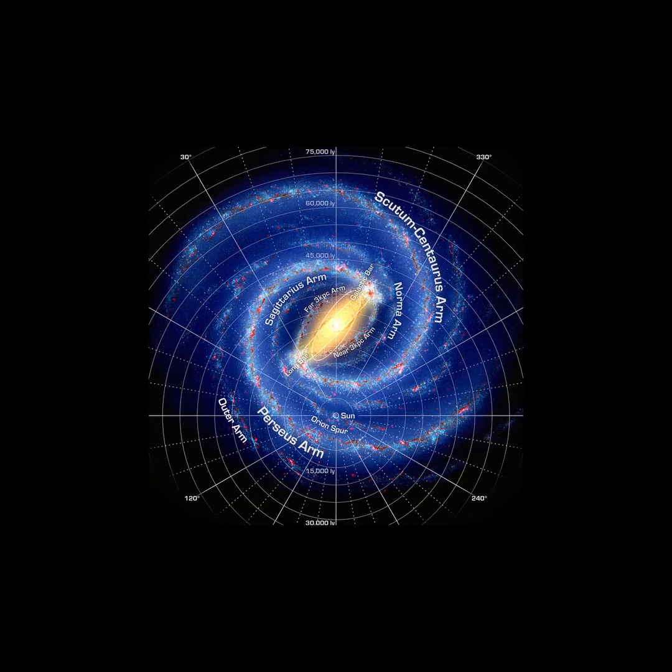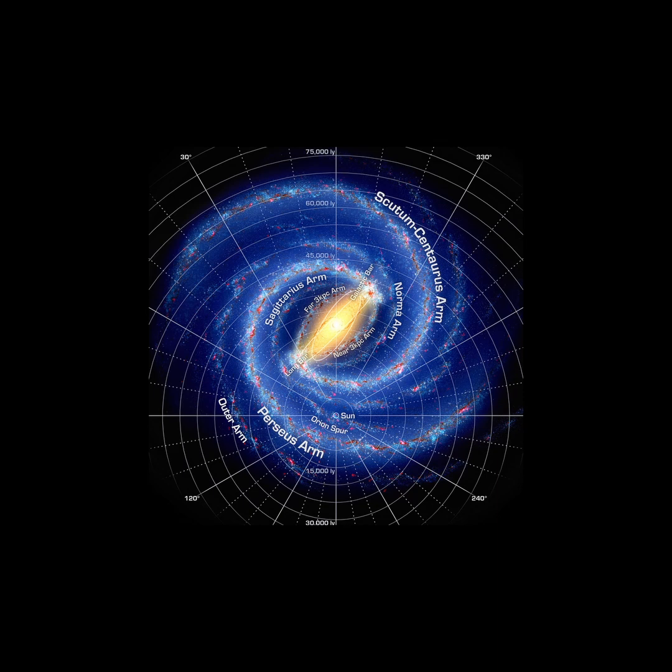Our Sun orbits the center of the Milky Way galaxy at a velocity of 230 kilometers per second. The Sun makes a complete orbit around the galaxy every 230 million years.